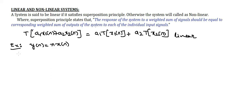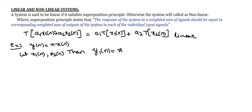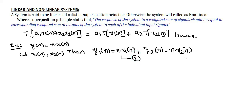Now I am taking two individual samples for the given input signal: x1(n) and x2(n). The individual responses for these are y1(n) = n·x1(n) and y2(n) = n·x2(n). I am giving these two equations the numbers equation 1 and equation 2.